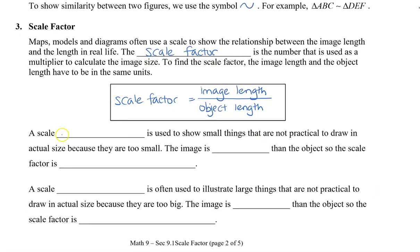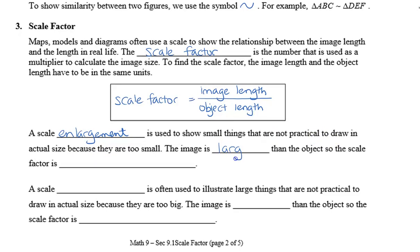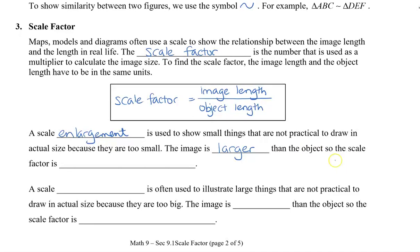A scale enlargement is used to show small things that are not practical to draw in actual size because they are too small, so the image will end up being larger than the object, and the scale factor is going to be greater than 1. For example, if we have a scale factor of 5, that means the image is 5 times bigger than the original object.